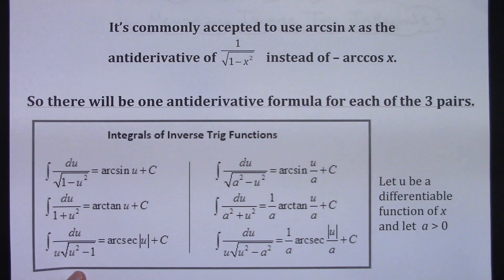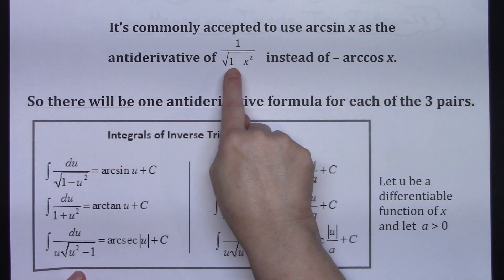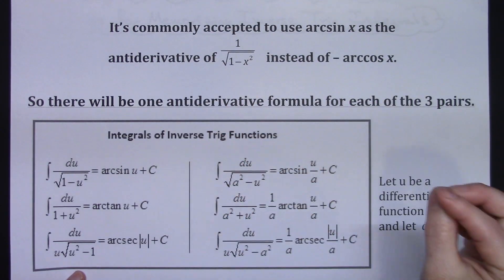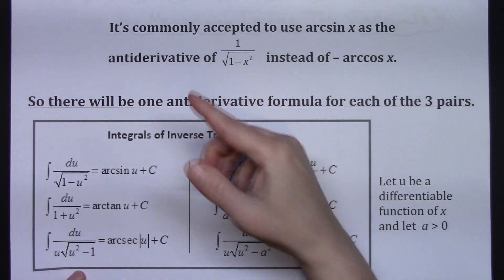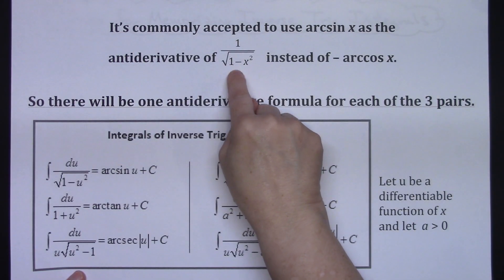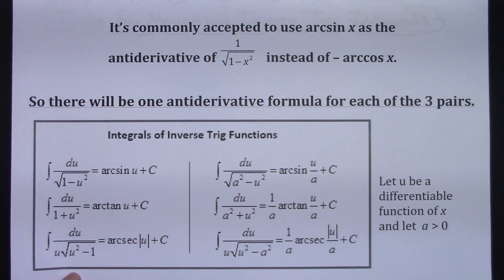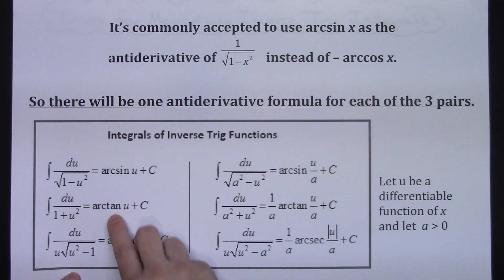Now, it is commonly accepted for us to say the inverse sine is the antiderivative of the one over square root of one minus x squared, because if not, then we would have to say it's the negative inverse cosine. And it's just more commonly known to say it's the inverse sine. Now, here I have listed the three - one of each pair - antiderivatives for each one of those inverse trig functions. So here's the inverse sine, inverse tangent and inverse secant.